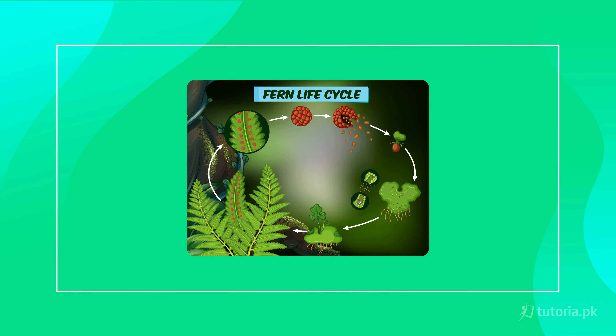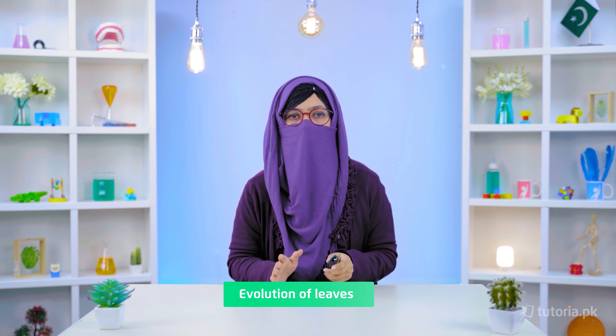The fertile leaves of ferns are known as sori, which produce spores. When the spores fly out, they give rise to gametophytes. Both male and female organs are present on this gametophyte. Then the fertilization process produces a zygote. The zygote develops into an embryo, and the embryo divides to form the sporophyte. This sporophyte initially depends on the gametophyte for food, but then becomes independent. Regarding the evolution of leaves: leaves developed from primitive vascular plants, but we don't have fossil records to fully describe their evolution or provide evidence. Scientists use two theories: the outgrowth hypothesis and the reduction hypothesis.